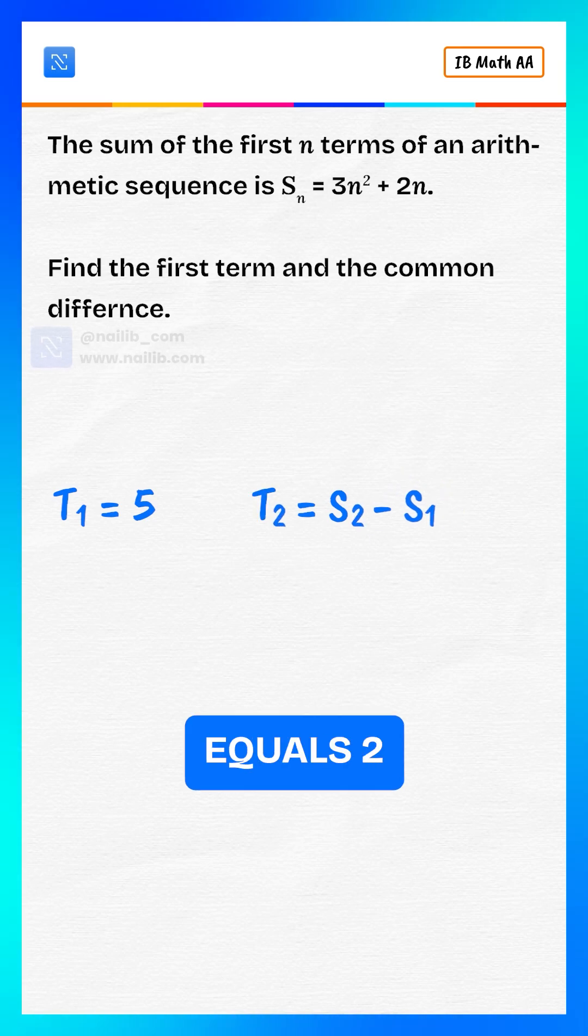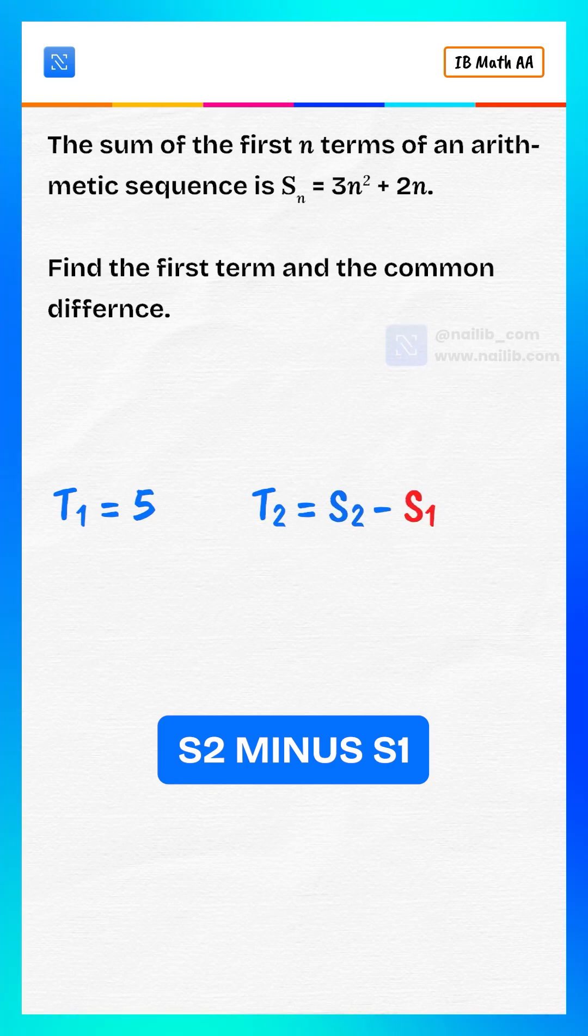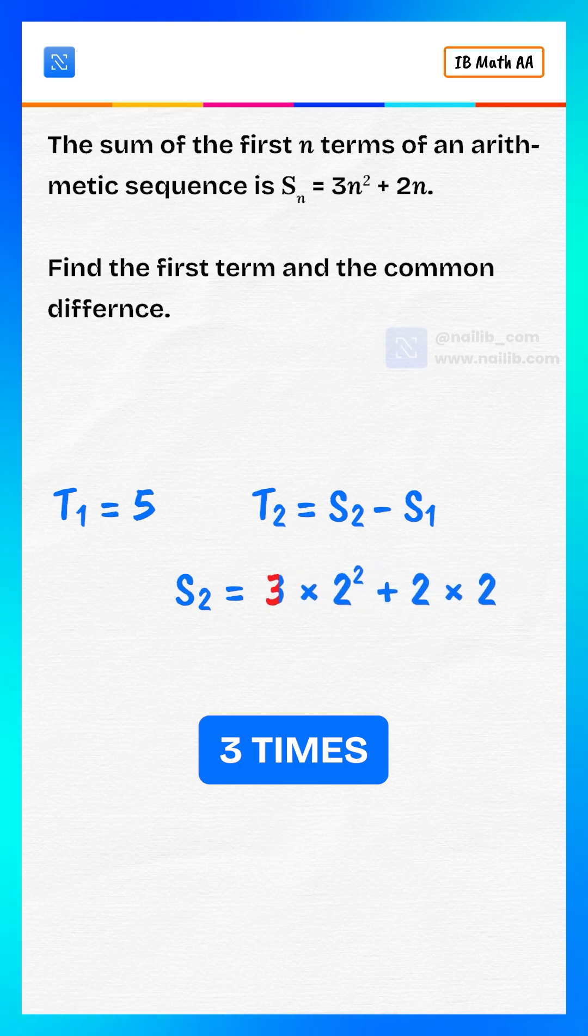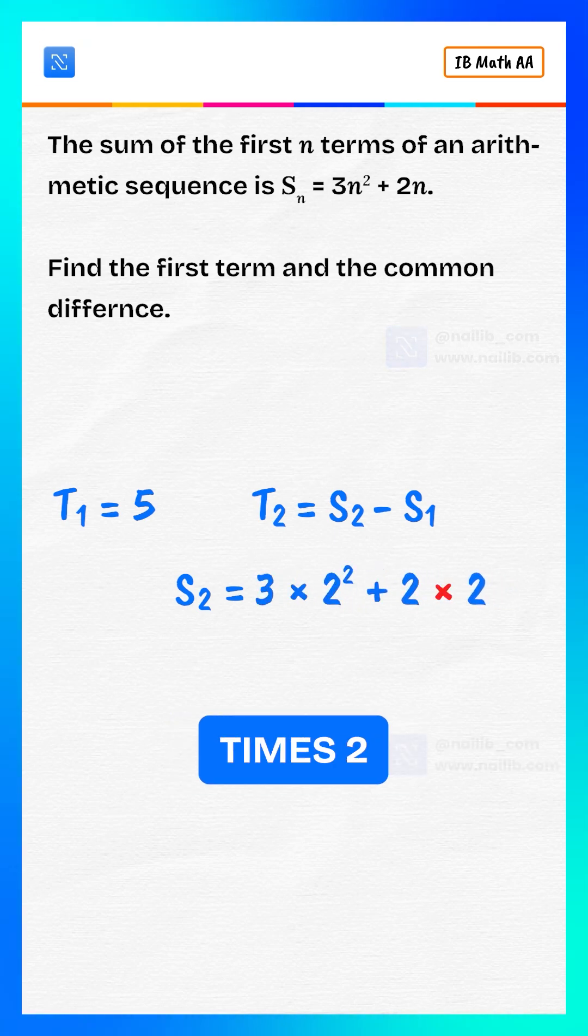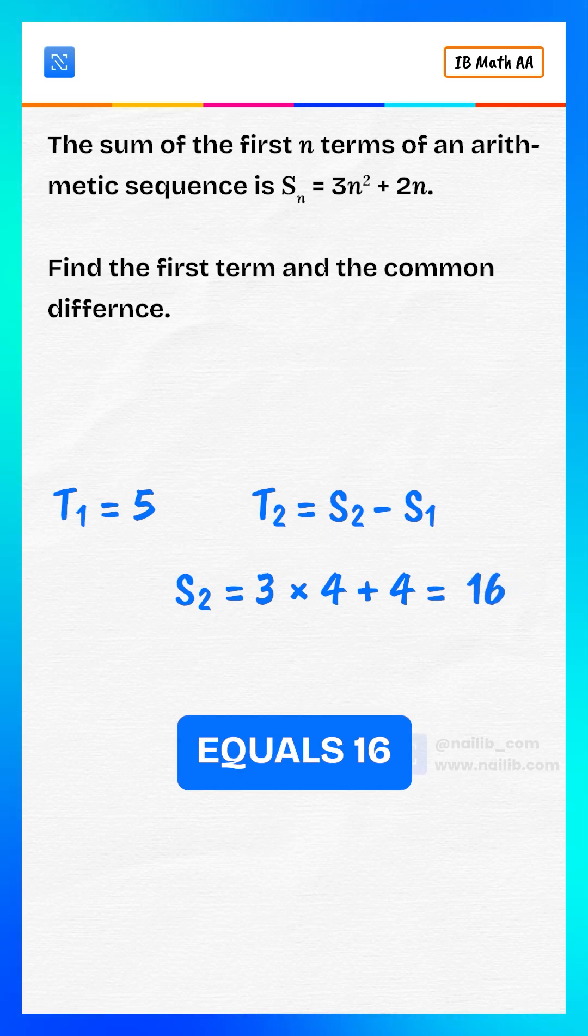For the second term, put n equals 2. So T2 equals S2 minus S1. We now calculate S2. S2 equals 3 times 2 squared plus 2 times 2.